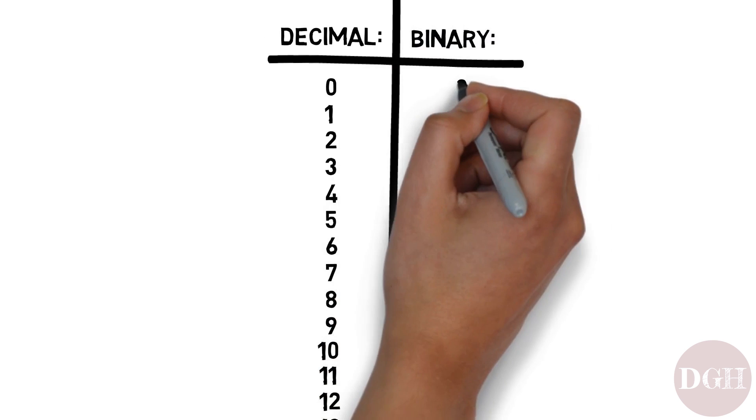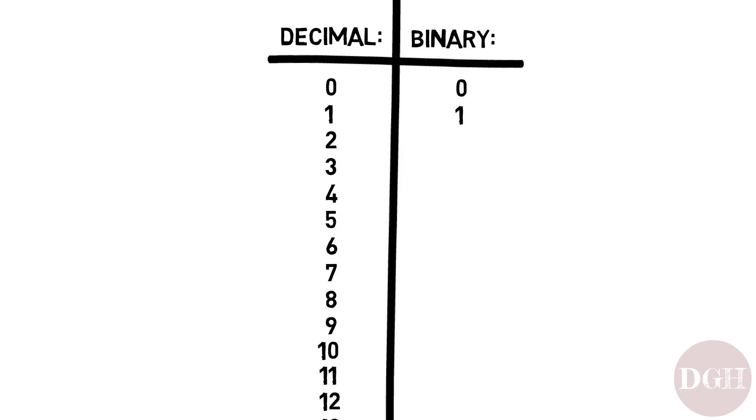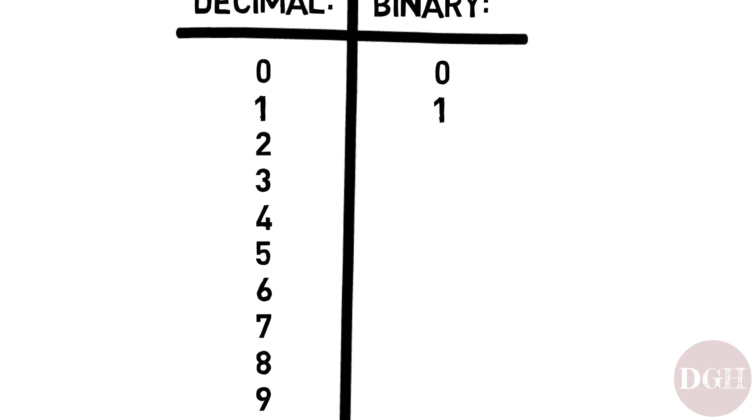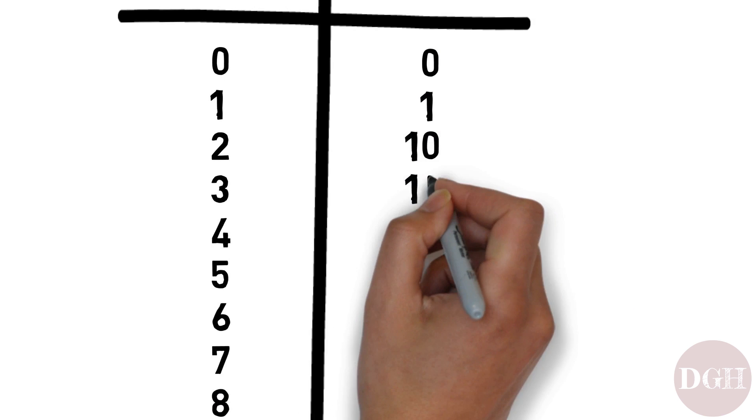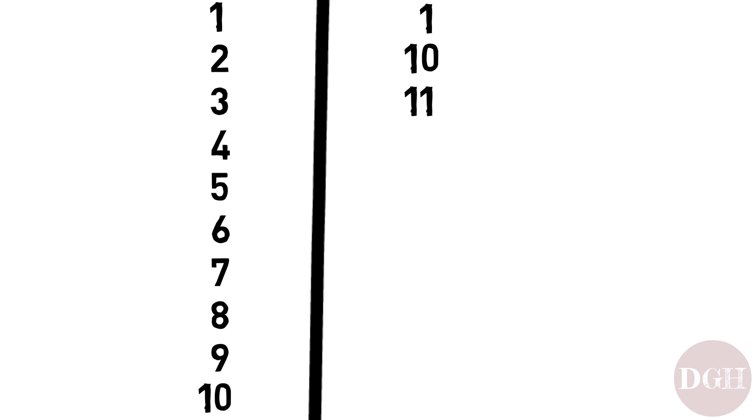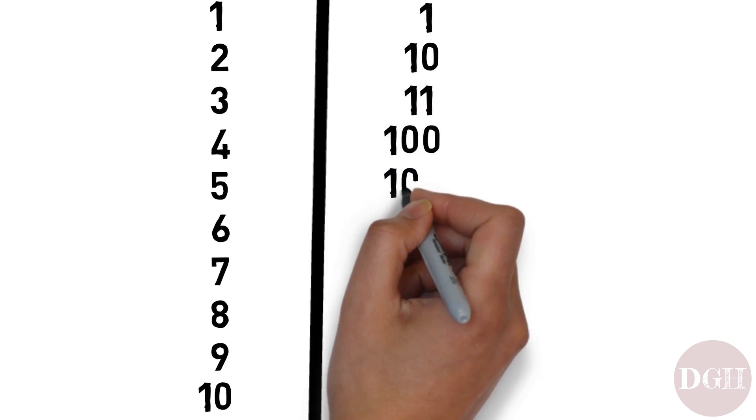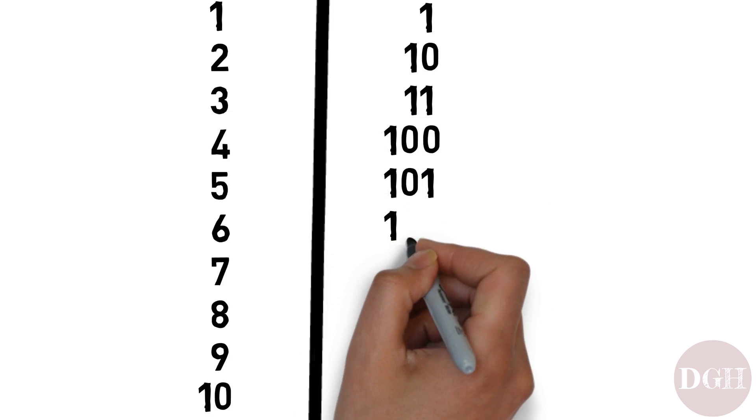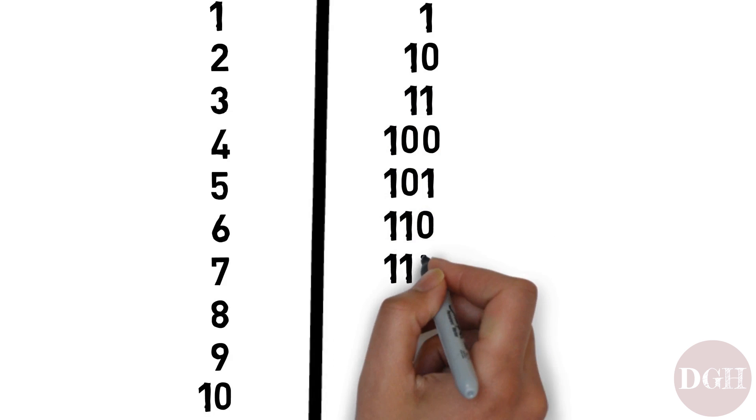We start with 0, then 1. Now we've run out of options, so we have to use another digit. We get 1-0, then 1-1.